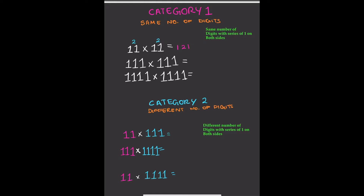Don't worry if you don't understand it yet — by the next example you will. Now we've got three digits because we're doing 111 times 111. We start from 1, increase to 3 — so 1, 2, 3 — then decrease back to 1 again — 2, 1. So the answer is 1, 2, 3, 2, 1.